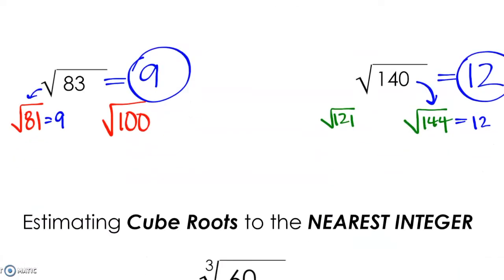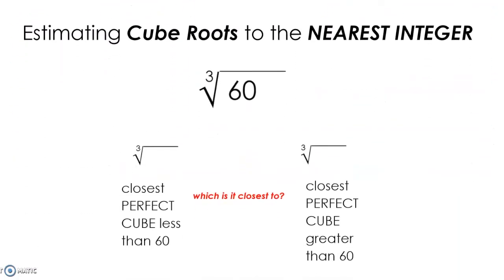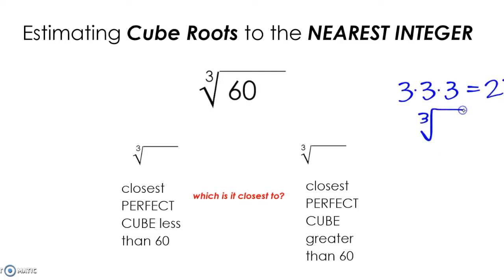Let's go to cube roots. We're going to use the same idea with cubes. We need to know what our perfect cubes are. Remember, a perfect cube is a number that has three equal factors. So 27 would be a perfect cube and the cube root of 27 would be one of the three equal factors. So the cube root of 27 would be 3.